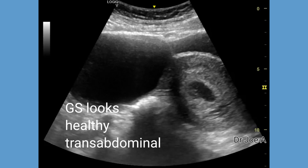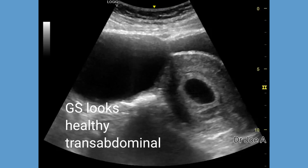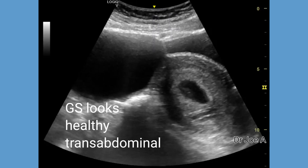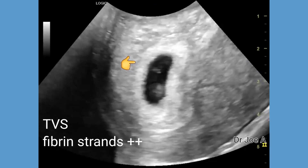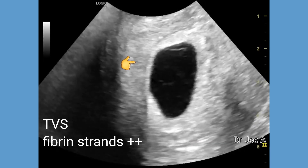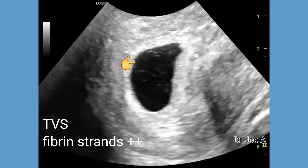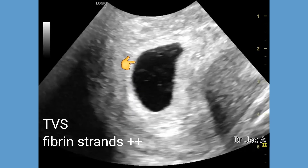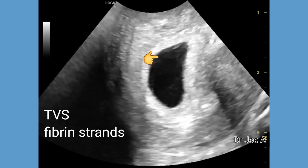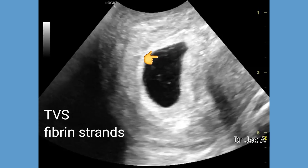We also did a trans-vaginal ultrasound to confirm these findings. Trans-vaginal ultrasound confirms the presence of a viable embryo with a yolk sac also seen. However, the trans-vaginal ultrasound also showed an interesting feature of thin strands within the gestational sac.